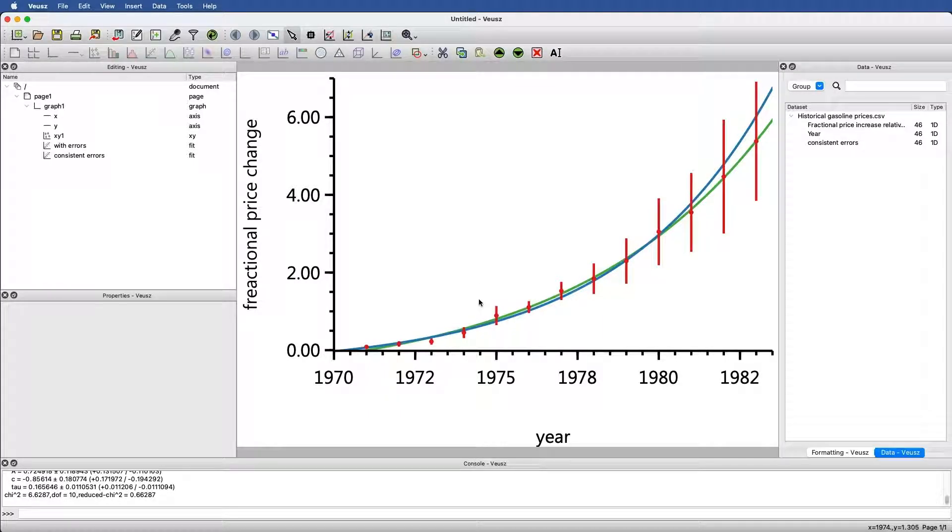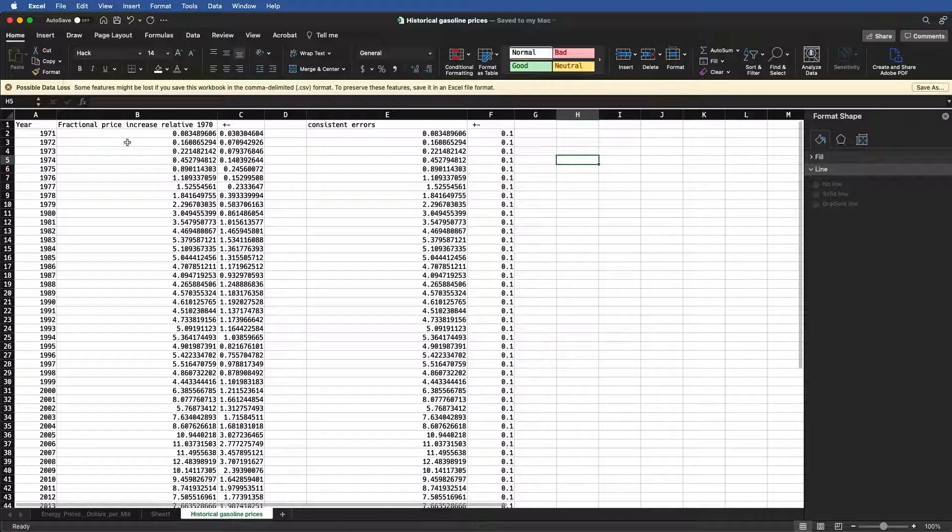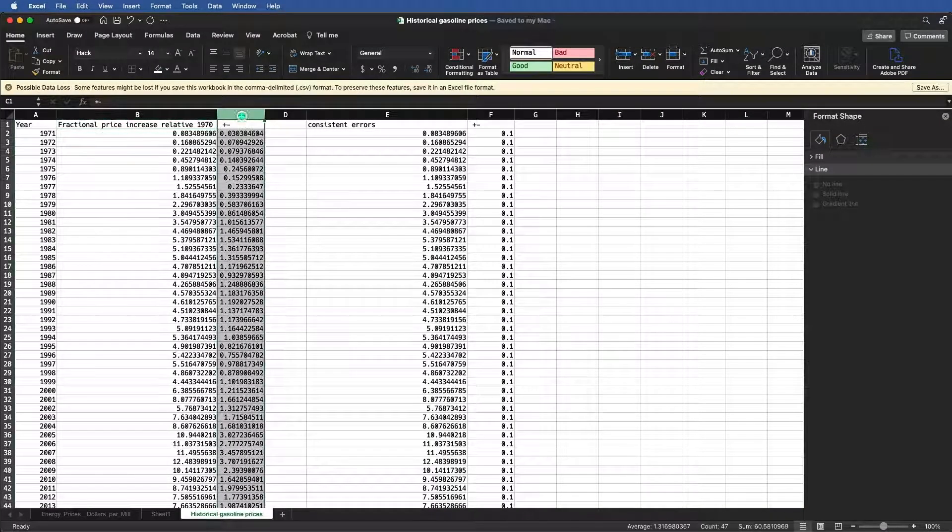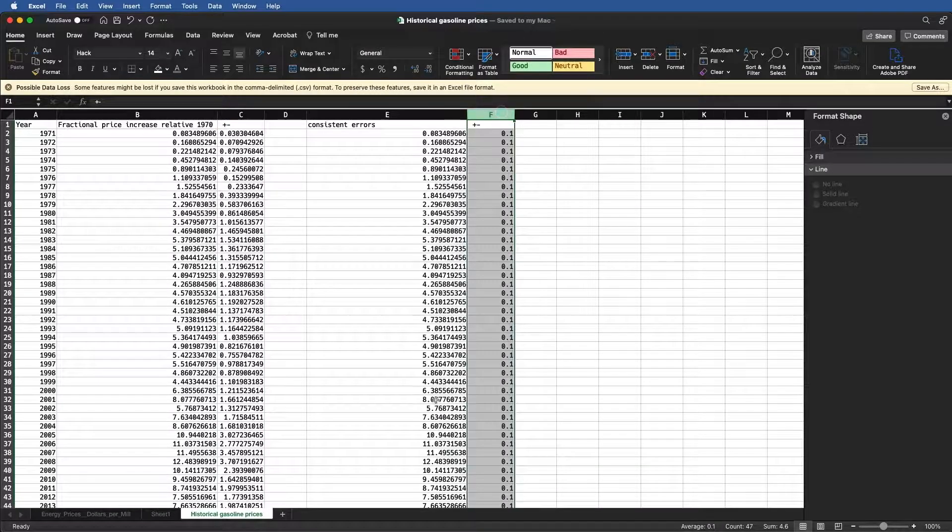In the last video, we saw how to fit data with error bars, making the error either consistent or not. That was done using the data for gasoline prices shown here, where we had the data with the experimental error or the error in the measurement, and then one where we made the error exactly the same.